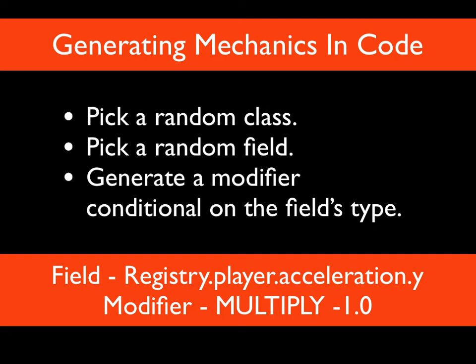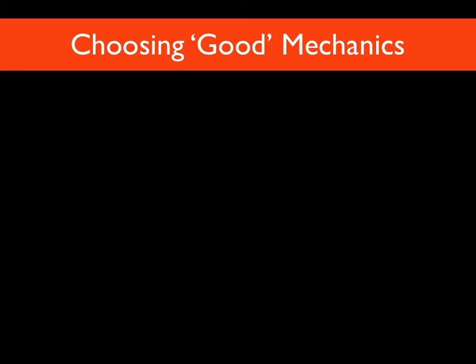When you press a button in the game, it finds that field and applies the modifier. In Flixel, acceleration is how you typically express gravity on an object. So multiplying that value by minus one would flip gravity upside down in a VVVVVV style. That's how to generate a mechanic - but that mechanic might be completely meaningless; it might just change the colour of the text, because we're just picking random fields and random classes. So how do we decide if a mechanic is good or not?